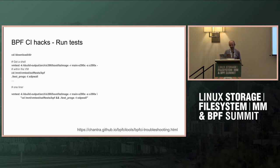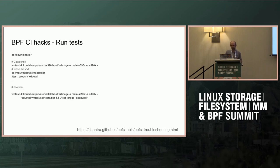Now we have our kernel, selftests, and rootfs directory matching the CI environment. Using vm_test, pass `-k` for the kernel, `-r` for the rootfs path, and specify the target architecture if it's a foreign one. You can either pass a dash to get a root prompt, or pass the command you want to run and vm_test will start the kernel, run the command, exit with the result code, and output everything to your terminal.